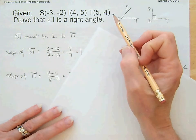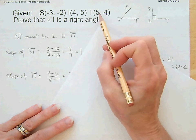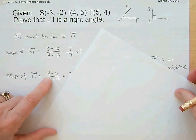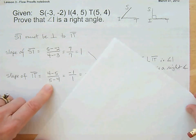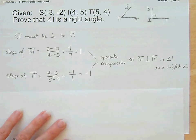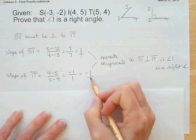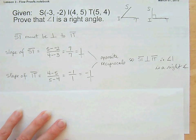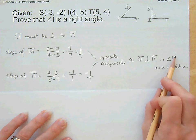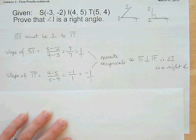Now let's find the slope of IT. 4 minus 5 over 5 minus 4, that's negative 1 over 1, which is negative 1. And 1 and negative 1 are opposite reciprocals because 1 is the same as 1 over 1, and negative 1 is the same as negative 1 over 1. So SI is perpendicular to IT. Therefore, angle I is a right angle.